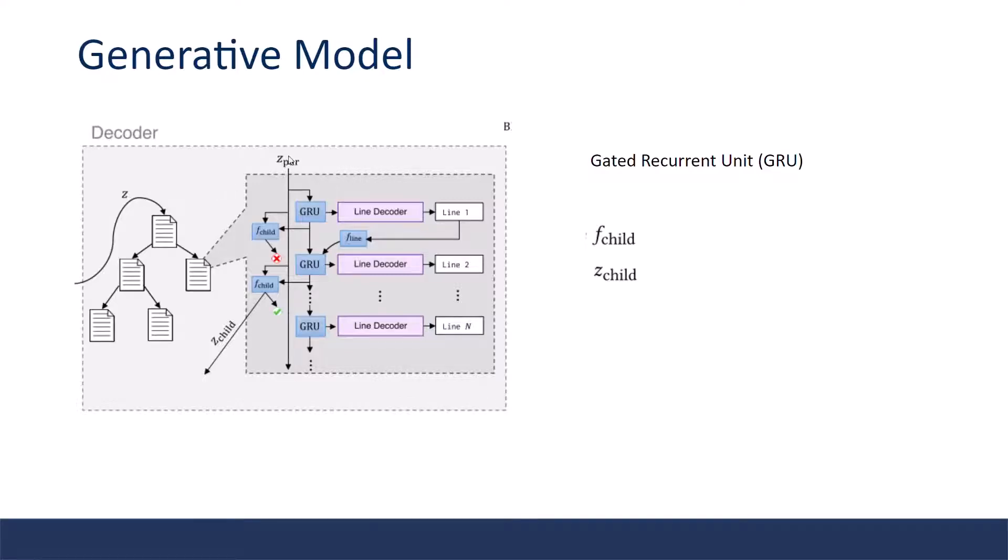Given the latent code z_parent, the decoder uses it to initialize the hidden state of a gated recurrent unit, which is responsible for constructing a representation of the program state. The output of the GRU cell is sent to the line decoder, which predicts a line in the Shape Assembly grammar that is then passed back to the GRU at the next time step. The submodel F_child here is used to generate a hierarchical program. It is executed after every cuboid command to determine whether that cuboid should be recursively expanded. It takes the current hidden state of the GRU as well as z_parent as input and returns a boolean flag and a new latent code called z_child. If the boolean flag is true, then the cuboid should be expanded and z_child will be the z_parent for the child program.